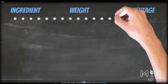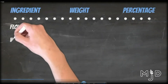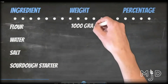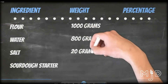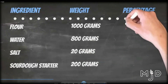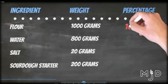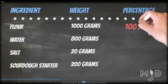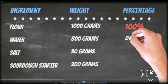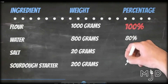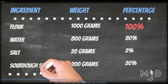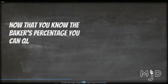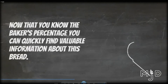We have three tables here: ingredient, weight, and percentage. In the first one, we're going to write down the ingredients of a standard loaf of bread — flour, water, salt, and sourdough starter. Let's use 1,000 grams of flour so that we can calculate the formula easily. Flour is equal to 100%, so 1,000 grams of flour equals 100%. For water at 800 grams, we divide by 1,000 and multiply by 100 to get 80%. We do the same with salt and sourdough starter to give us 2% and 20% respectively. Now that you know the baker's percentage, you can quickly find valuable information about this bread — for example, we know the hydration is 80%.